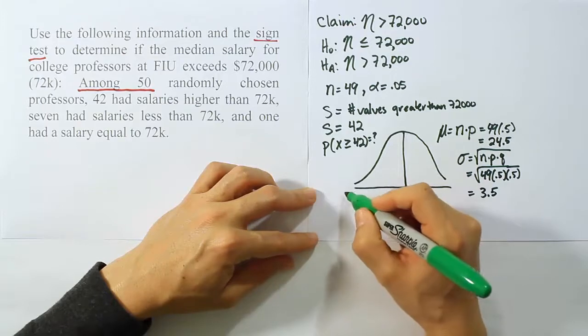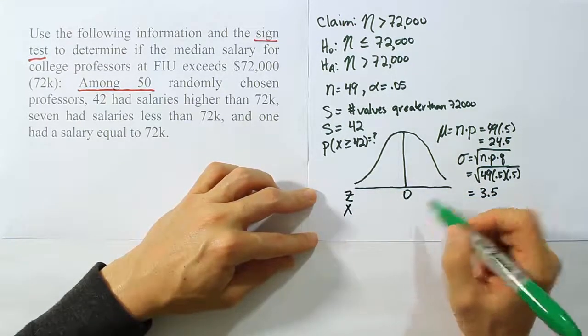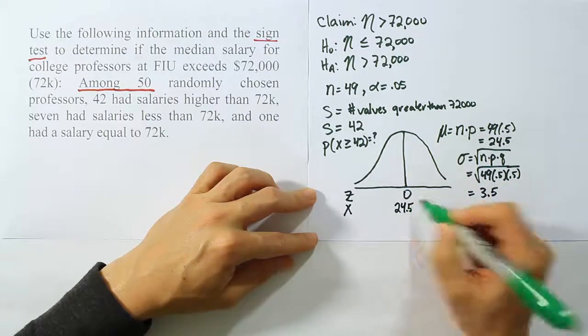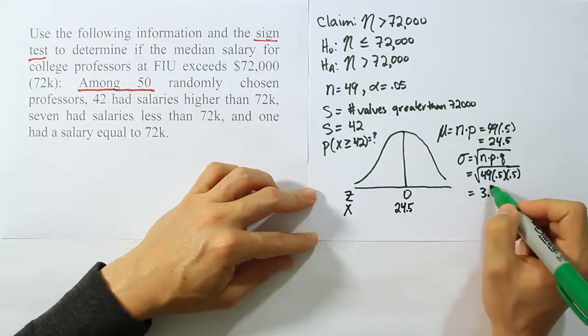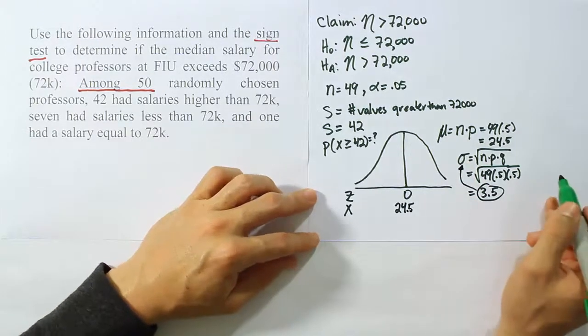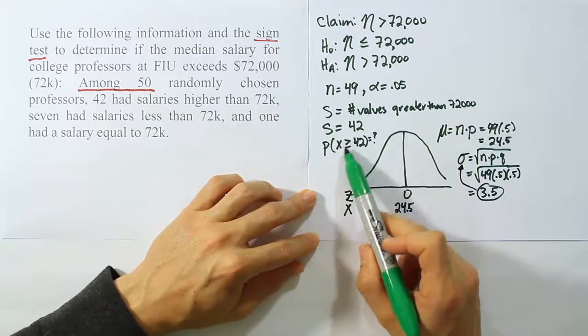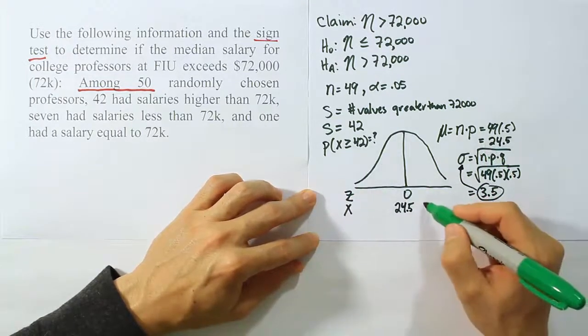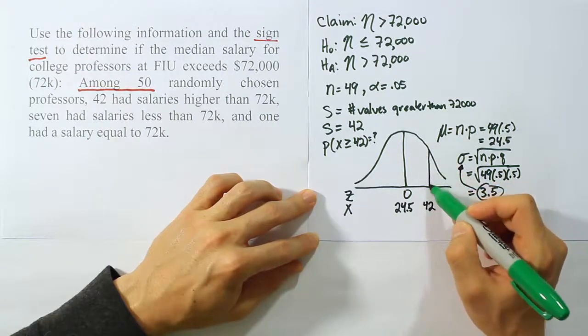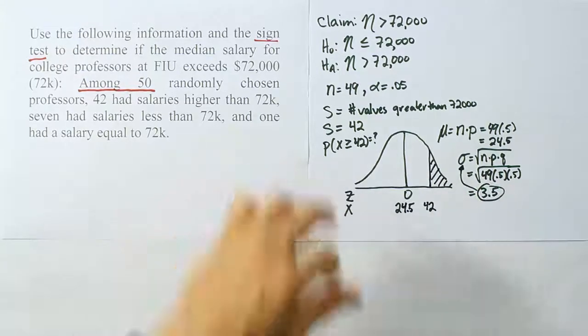So now we know the mean and the standard deviation for our curve. Let's put an axis here. We normally have a z-axis centered at 0 and an x-axis centered at the mean. The mean here is 24.5. The standard deviation is 3.5. We're going to put the x value in question here. We're looking for the probability that x is greater than or equal to 42. So we would put 42 on the right-hand side, and we would draw a line. And since we're looking for greater than or equal to, we'd shade the tail in the right-hand side.